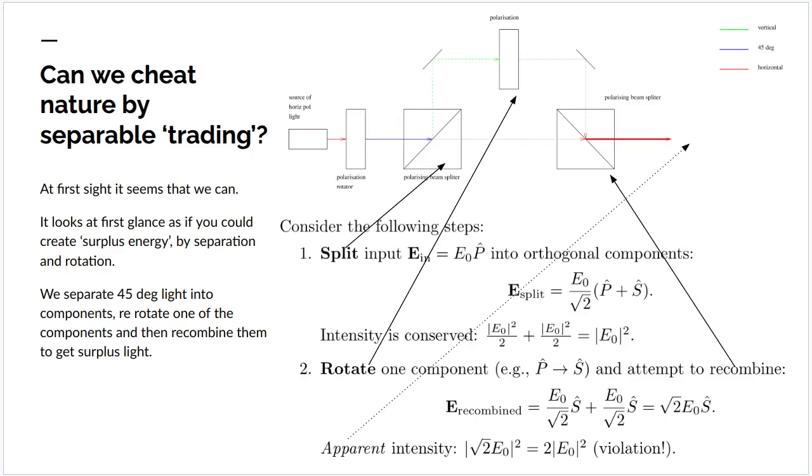Now, could we cheat nature? Could we create surplus light by separable trading? At first sight, it looks as if you could. It looks as if I could do exactly the same steps as I highlighted for the separable trading of linen and tea in a Euclidean vector space.